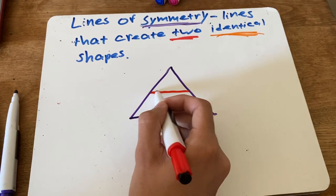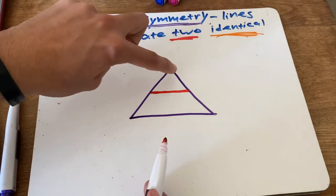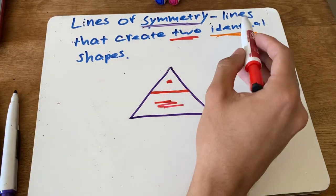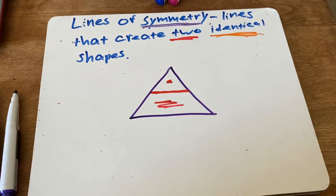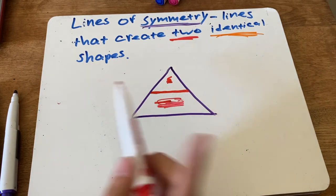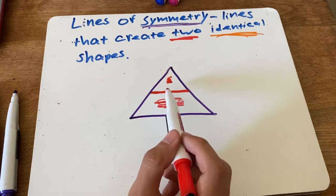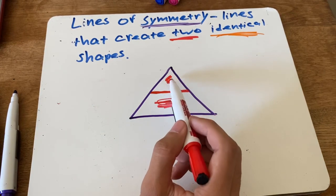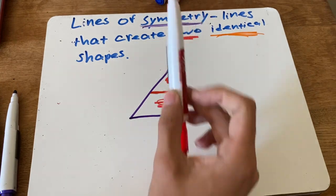Is this red line a line of symmetry? Well, now I have two pieces — this piece on top and this piece at the bottom. Lines of symmetry have to create two identical shapes. Is this shape on top the same as this shape at the bottom? No, therefore it is not a line of symmetry. This shape is a triangle, but the shape at the bottom is not a triangle, so it does not create two identical shapes.